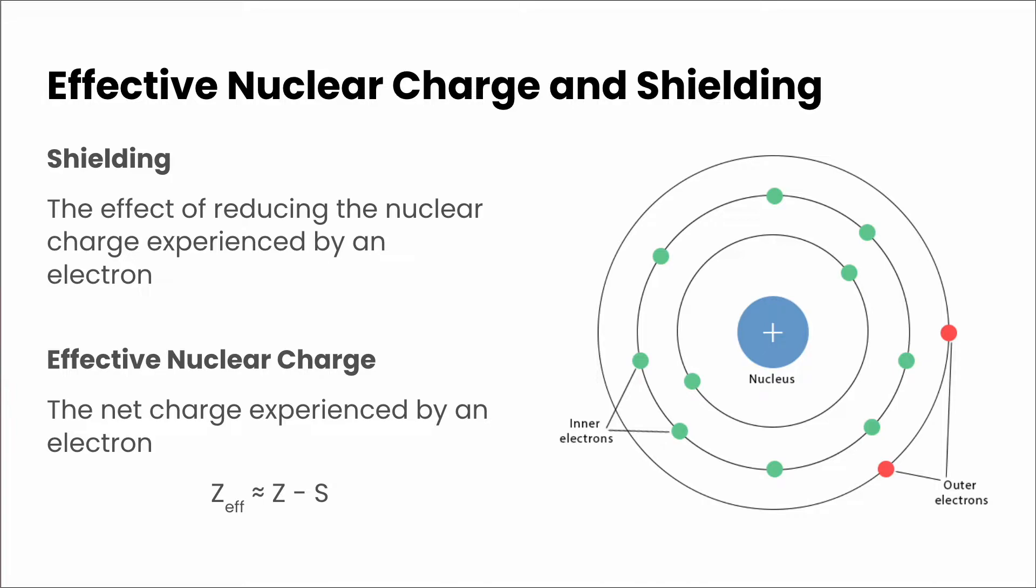So for example, if we took magnesium, magnesium has an atomic number of 12. And in this particular picture, we've got 10 electrons that are inside. So 12 minus 10 would give it an effective nuclear charge of approximately 2. But remember this calculation is not exact.